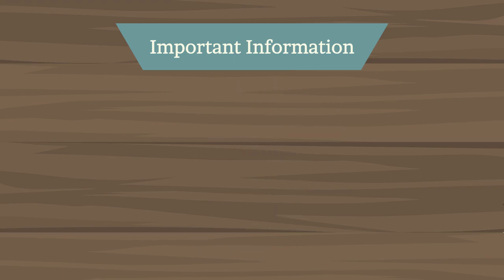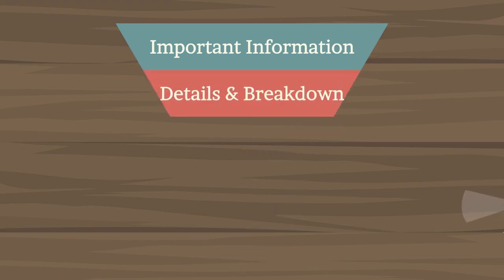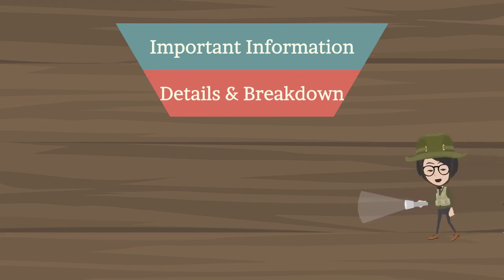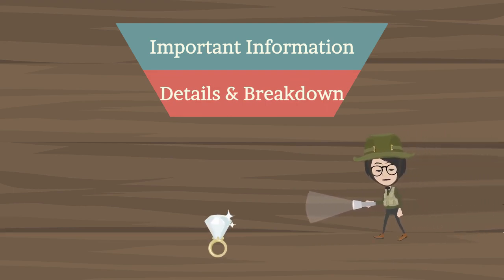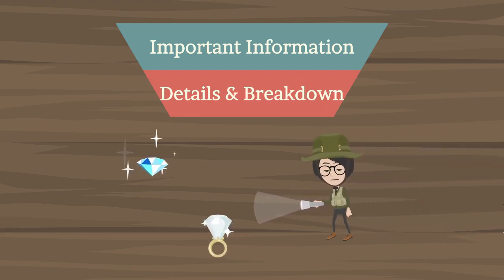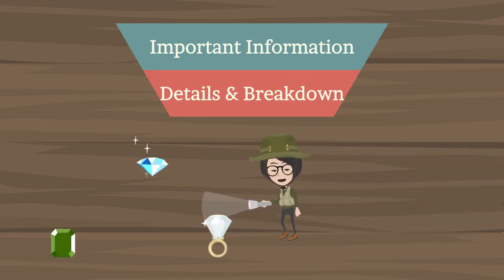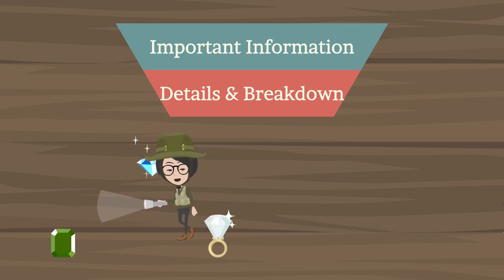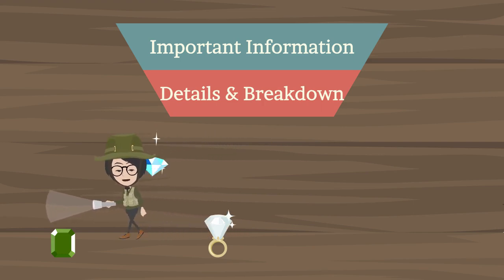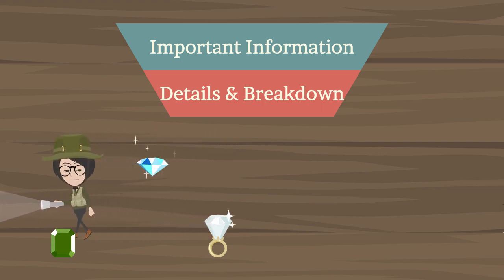The second component is the details and breakdown. It illustrates further development to the story. This should include facts and elements that can keep the reader's attention to the story.